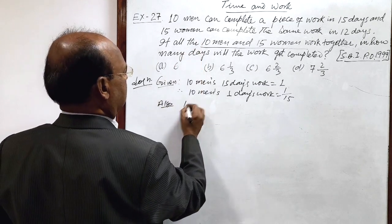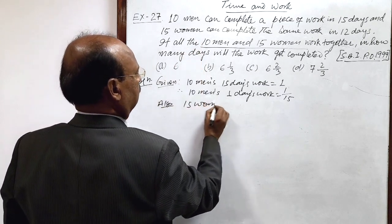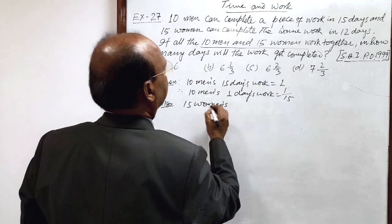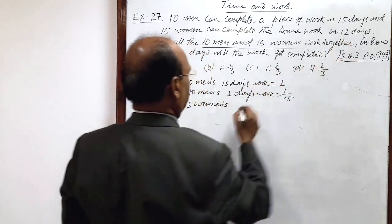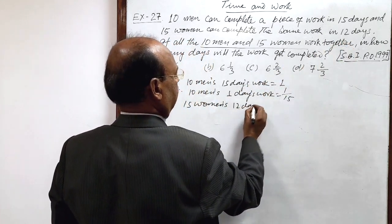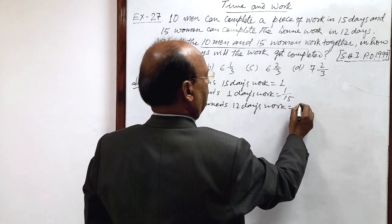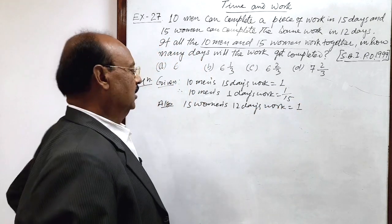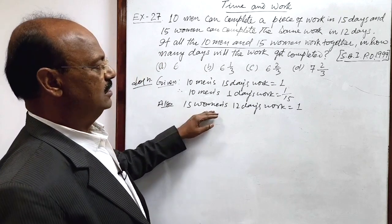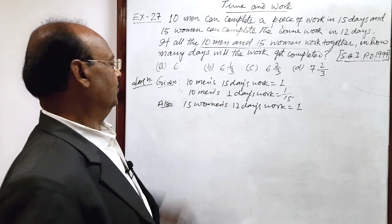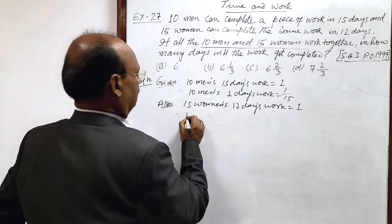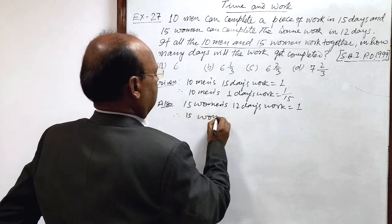Similarly, 15 women's 12 days work is equal to 1. So 15 women's 1 day's work by unitary method,